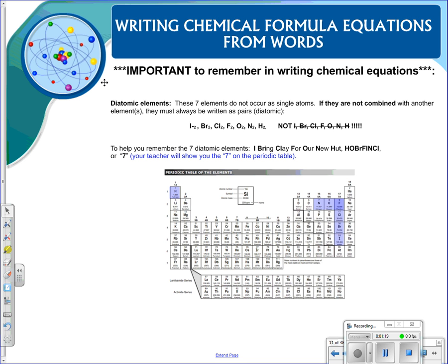Something important to remember when you're writing chemical equations are your seven diatomic elements. What does diatomic mean? Well, the word diatomic means two atoms. Di for two, atomic referring to atoms. So these diatomic elements have to be written in pairs because they do not occur as single atoms.